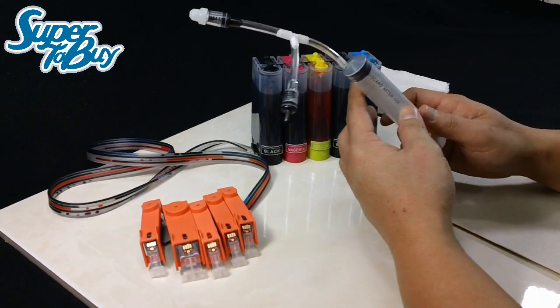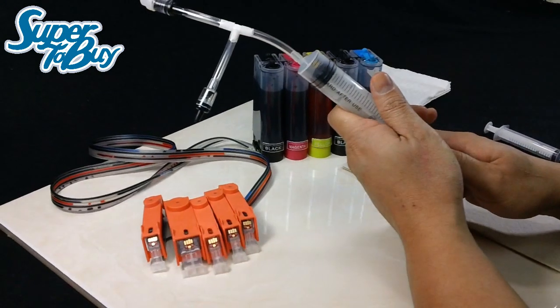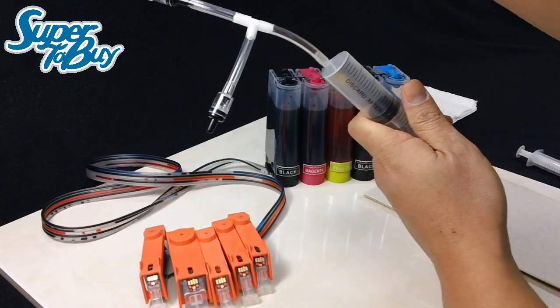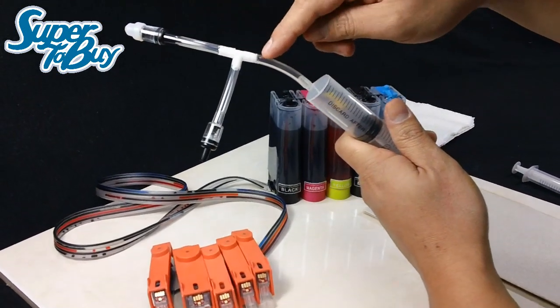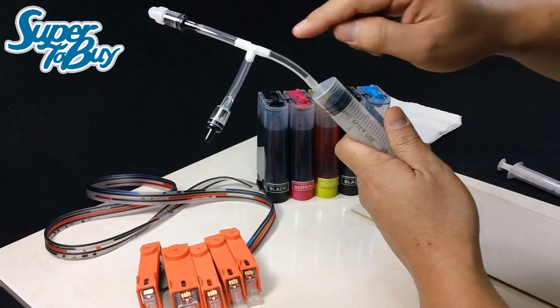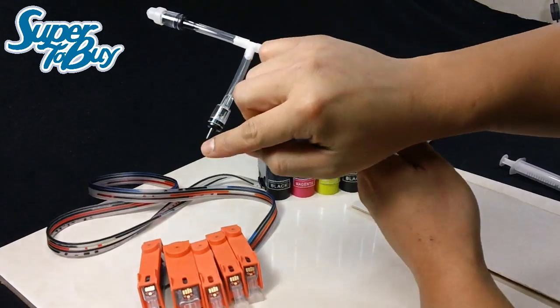How this vacuum syringe works is when I draw the plunger out, it's going to draw air in through this way. But when I push it back out, it's going to push the air out through an exhaust from a different hole.